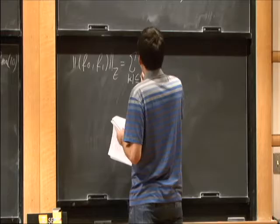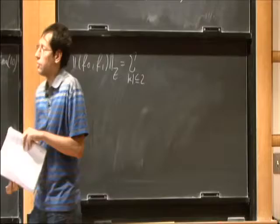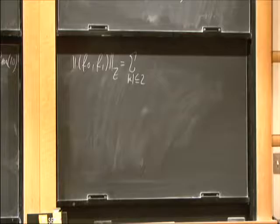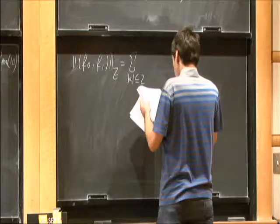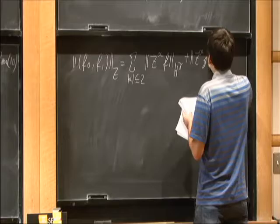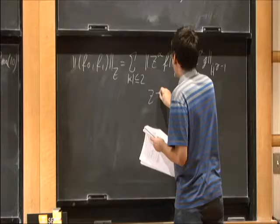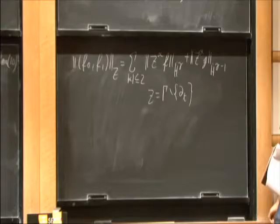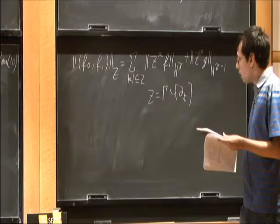The norm for our initial data is the sum over alpha ≤ 2 — and it's important that alpha is at most 2, we cannot put three derivatives, because we are close to p_c = 1 + sqrt(2). The norm is: norm of Z^alpha f in H^dot_gamma plus norm of Z^alpha g in H^dot_{gamma-1}, where Z is almost the same as Gamma, but without the dt vector field — no time translation.